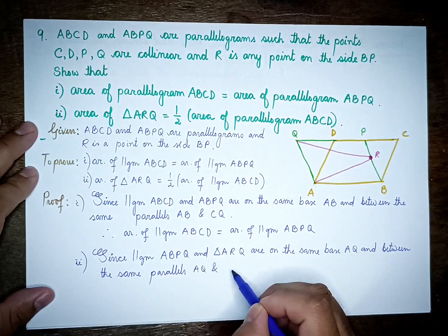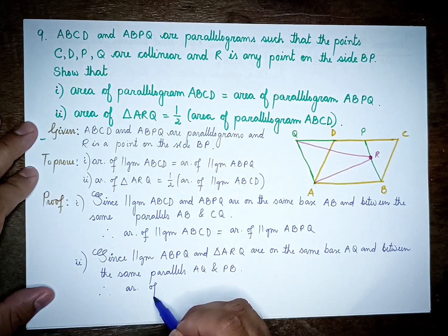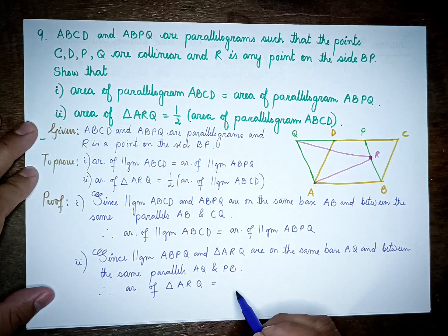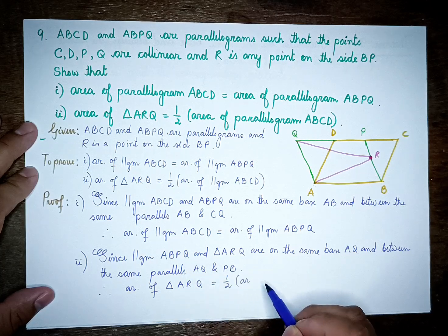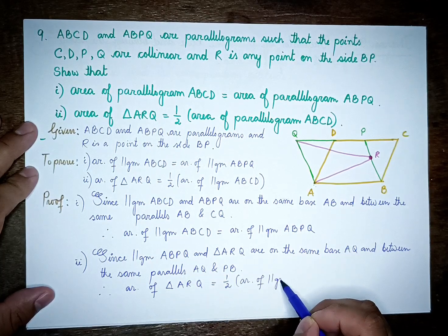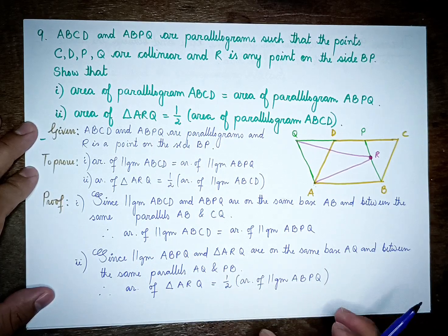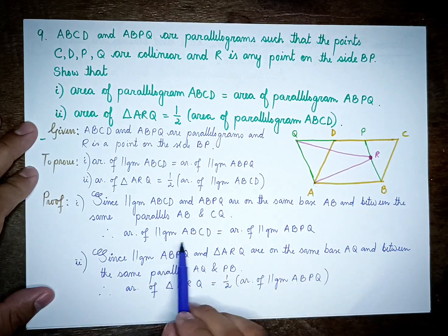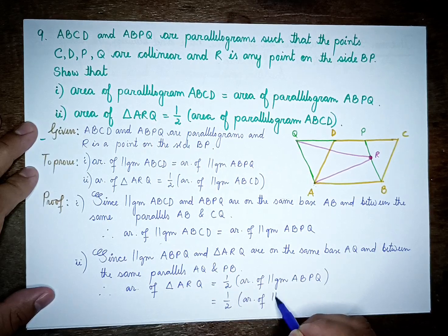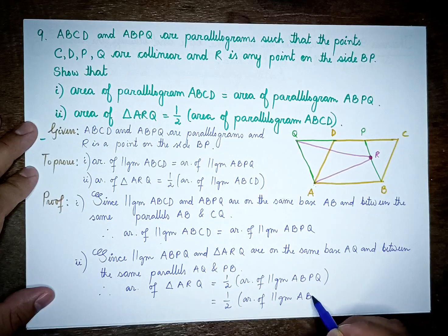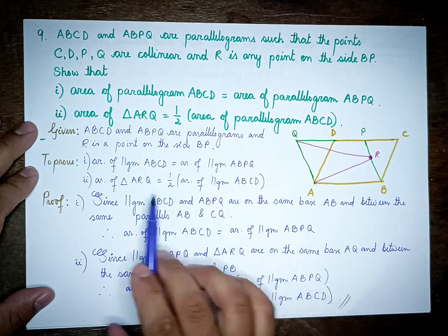Triangle ARQ and parallelogram ABPQ are on the same base AQ and between the same parallels AQ and PB. Therefore, the area of triangle ARQ equals half the area of parallelogram ABPQ, which equals half the area of parallelogram ABCD.